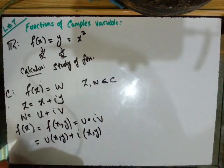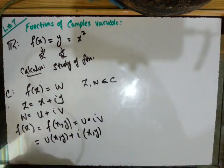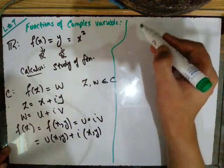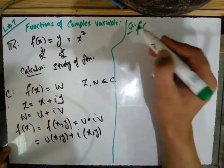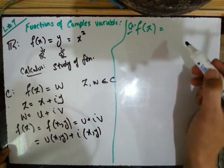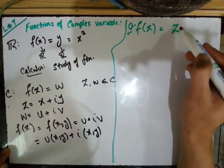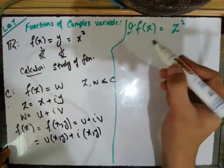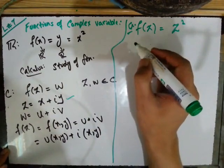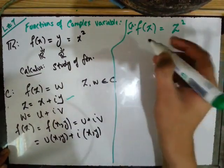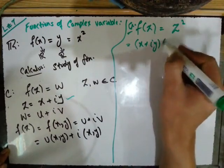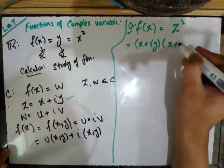For example, let the function be f(z) = z². Now z is equal to x plus iy. So z² means this function multiplied by itself — that is, (x + iy) multiplied by (x + iy).